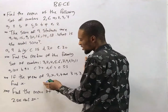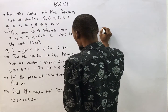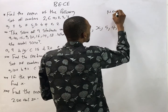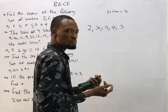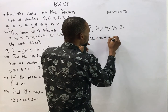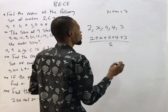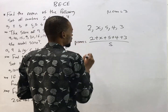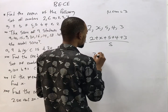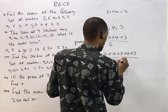The next question says: if the mean of 2, S, 5, 4, and 3 is 3, find S. Remember how to calculate the mean — it is (2 + S + 5 + 4 + 3) over 5. We are already given that the mean is 3, therefore: 3 equals (2 + S + 5 + 4 + 3) over 5.